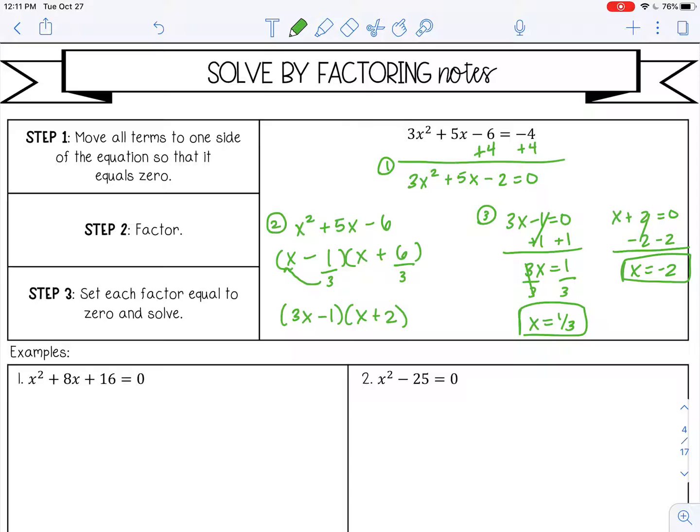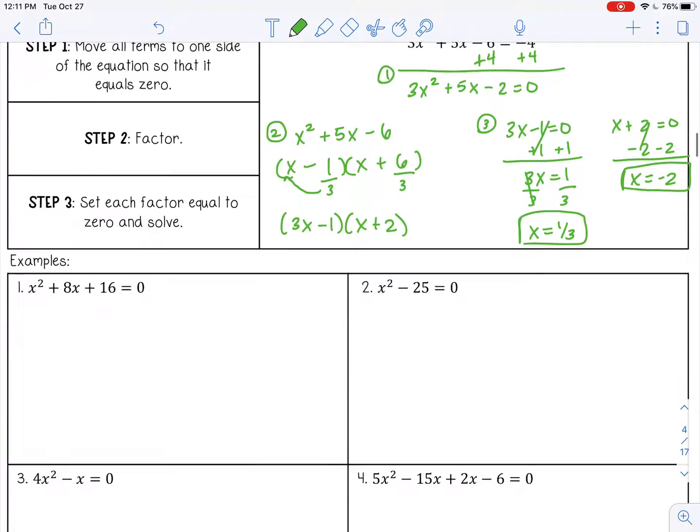This quadratic function has two real solutions at one third and negative two. If we graphed it, that's where it would cross the x-axis. Those are the x-intercepts or the zeros or the solutions.